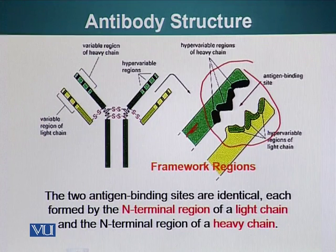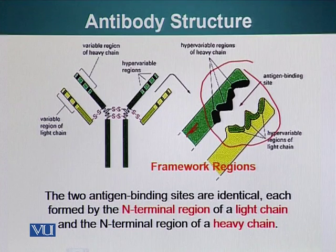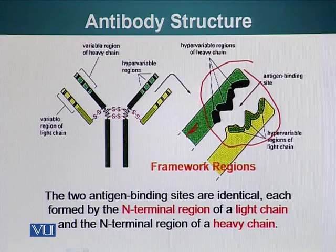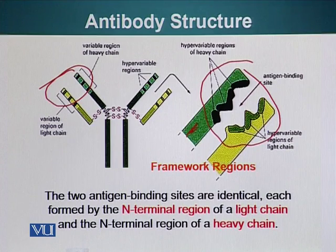The rest of the antibody is the framework region, which holds the antigen binding site. Framework regions are not only holding the site but also contribute to the three-dimensional shape of the antigen binding site. The two antigen binding sites are identical and are formed by the N-terminal region of both the light and heavy chains — this is where the antigen binds.